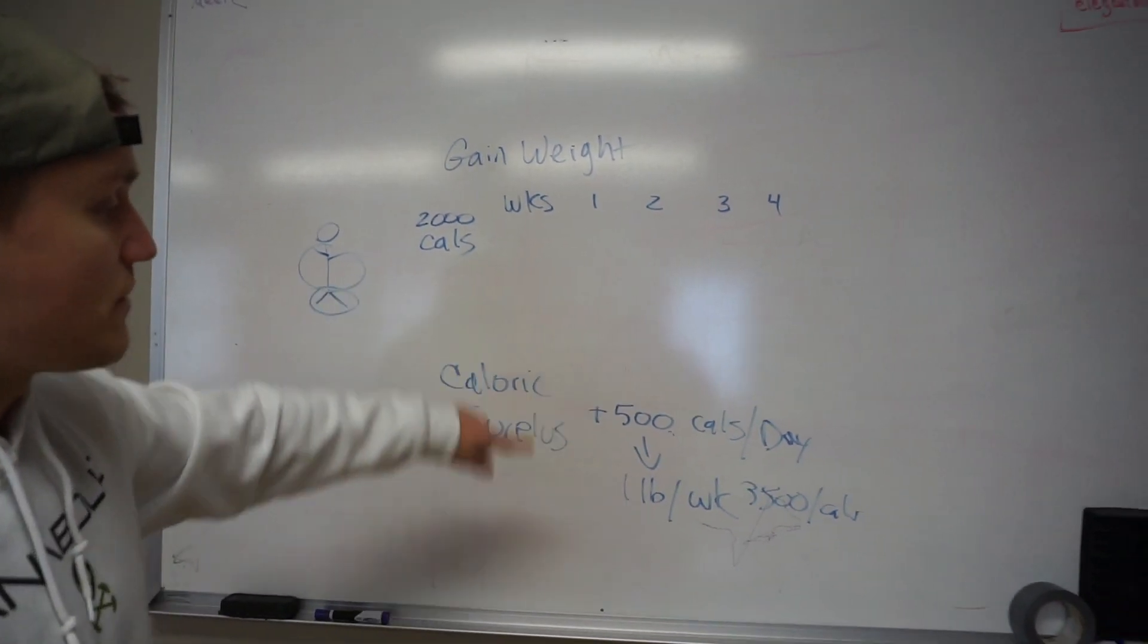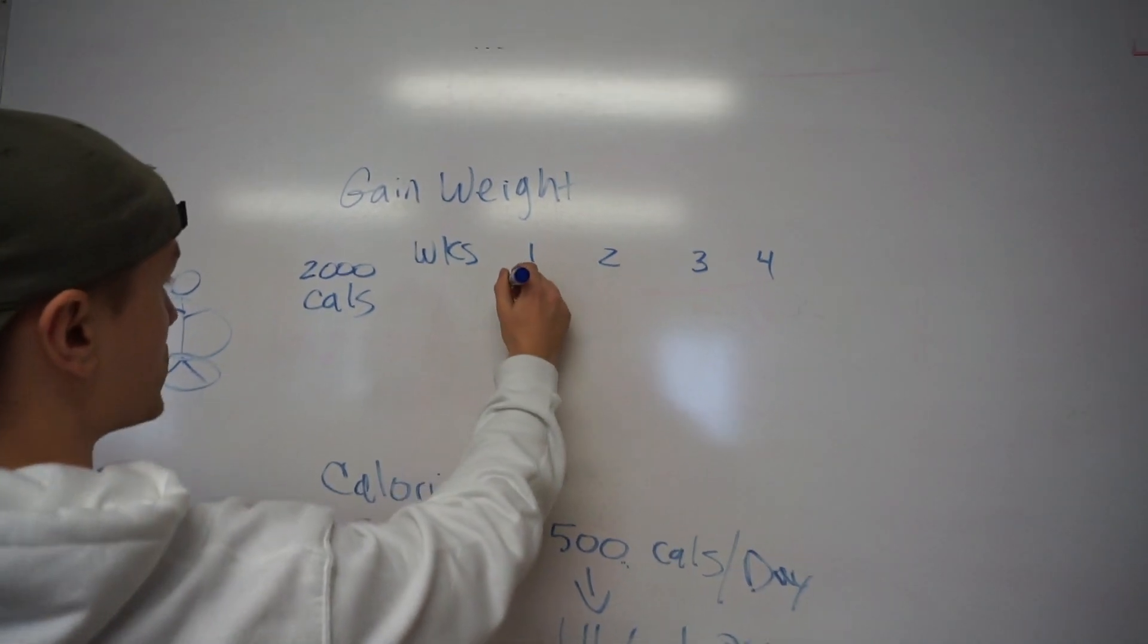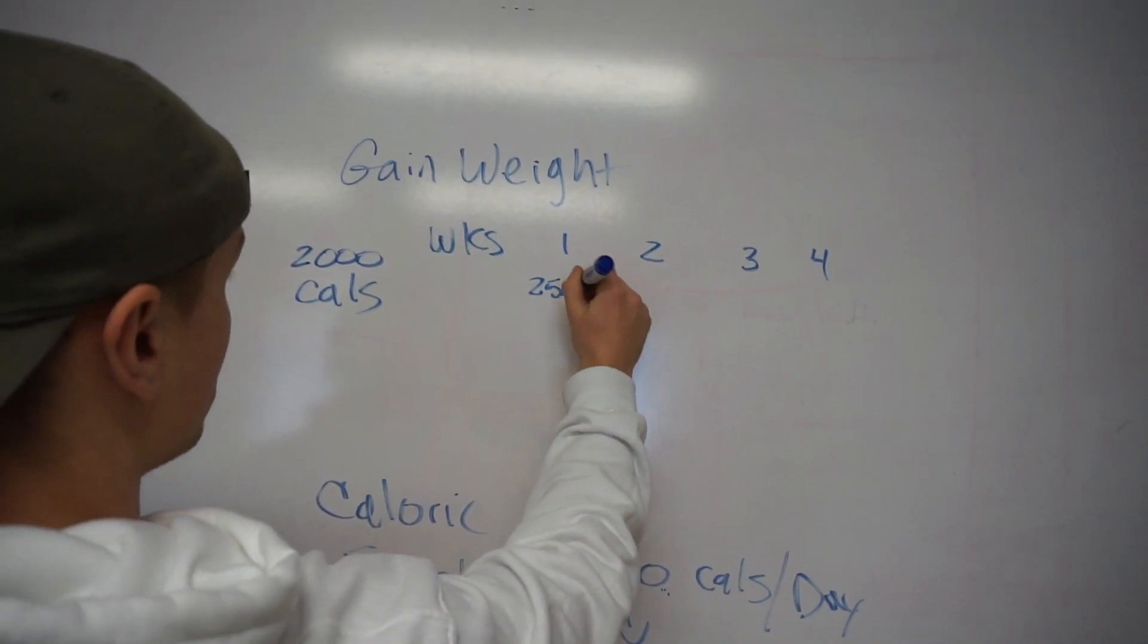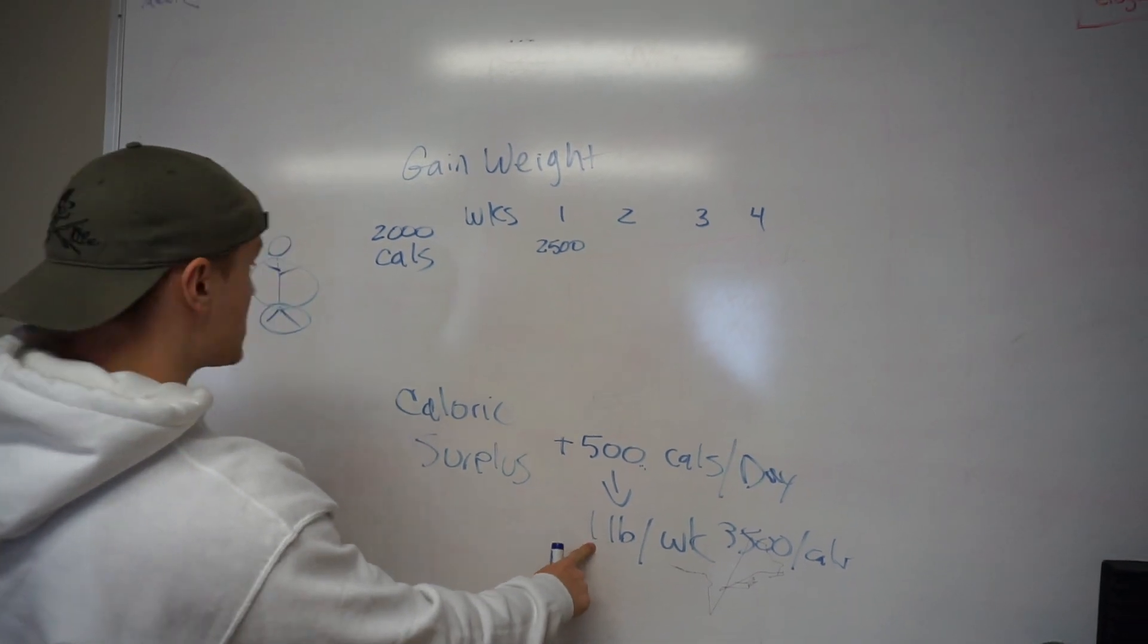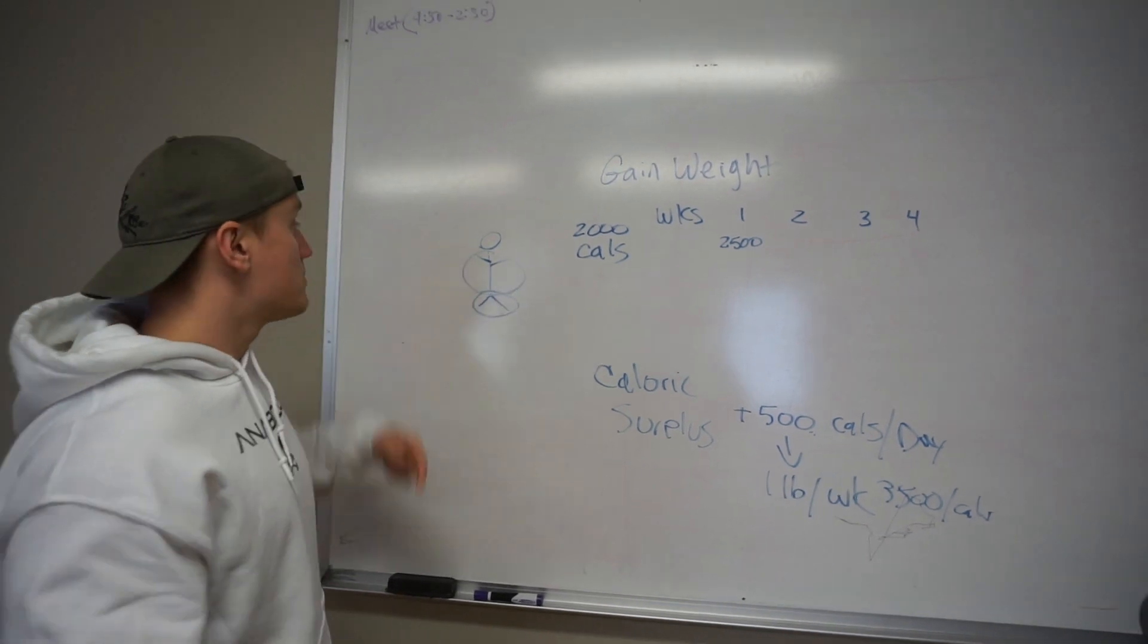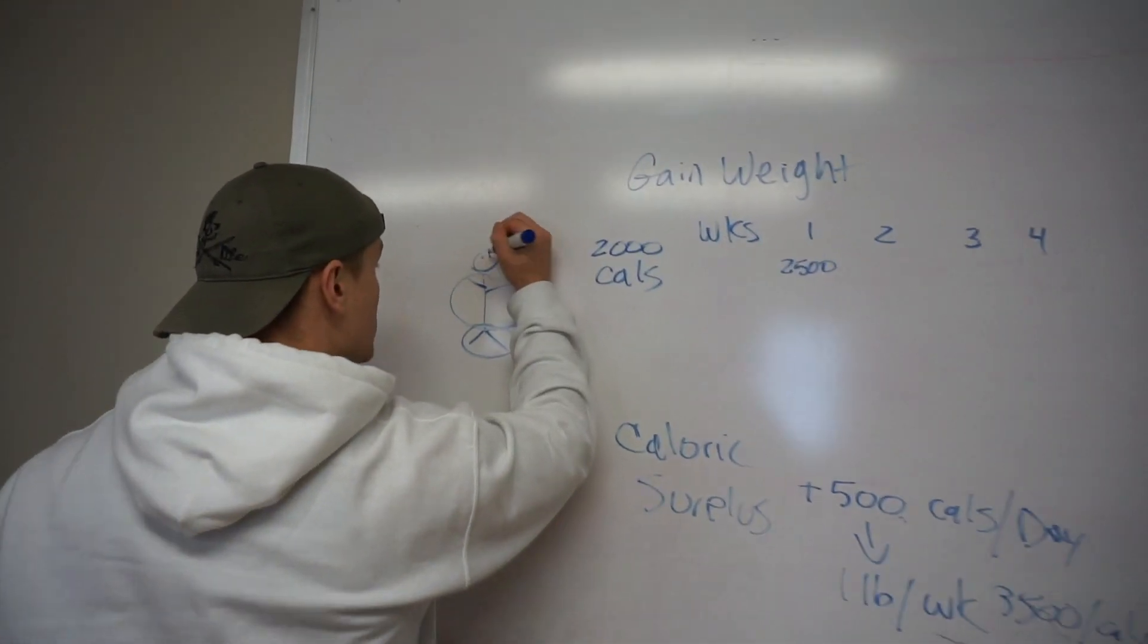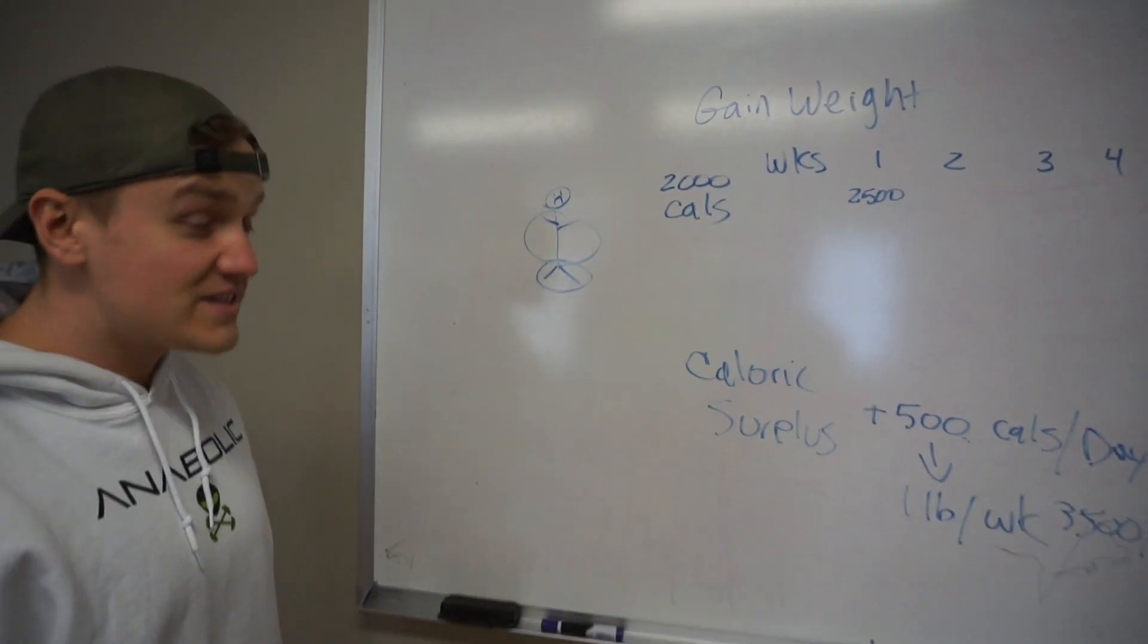So now that we've established that, we need to start off week one in a caloric surplus. So right here, we're at 2,500 calories. And again, we're aiming to get that one pound gain per week. But guess what? You're skinny. You've been trying to do this for a very long time, but it seems like no matter how much you eat, you can't gain weight. So that's an issue.